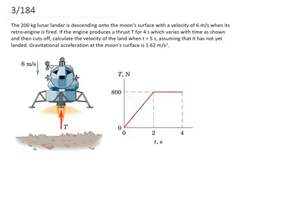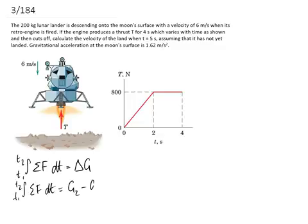And that equation is this one here. So the integral between your two different points of interest, t1 and t2, of the sum of the forces dt is equal to the change in linear momentum, or G. And if you want, you can rewrite this as the final minus the initial momentum, so G2 minus G1.